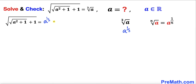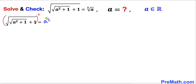Our equation can now be rewritten using the power notation. We are going to undo the outer square root by squaring both sides. The square and square root cancel, leaving us with the square root of a squared plus one, plus one, equals a to the power 2 over 3.